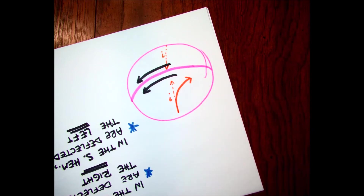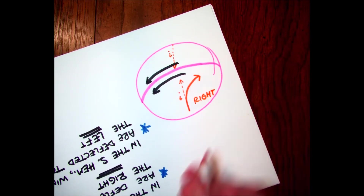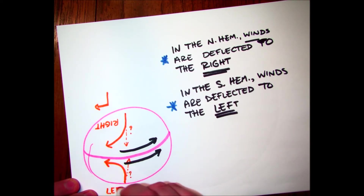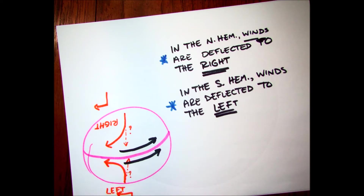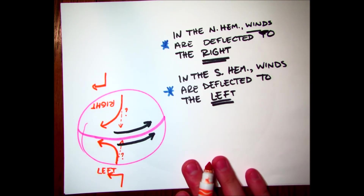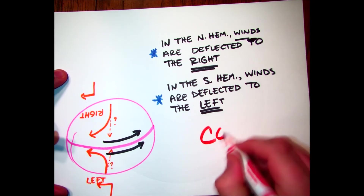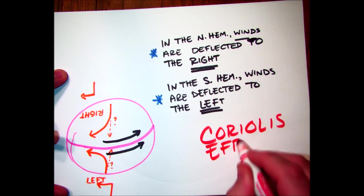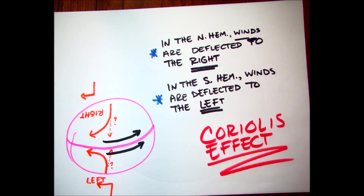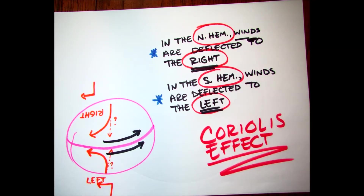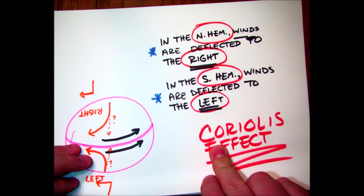The Earth is turning underneath the wind, and in the northern hemisphere the wind gets deflected to the right. In the southern hemisphere it gets deflected to the left. The Earth spinning underneath the wind — we call this the Coriolis effect, and it has a lot to do with our air currents.